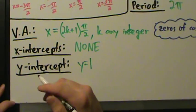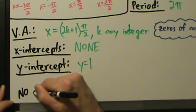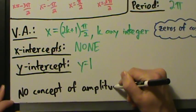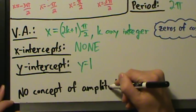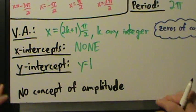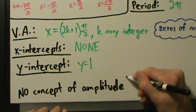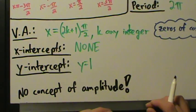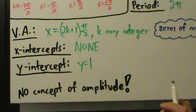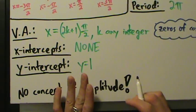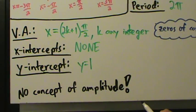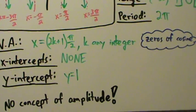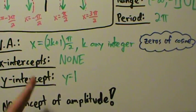It's worth mentioning that just like tangent and cotangent, there is no concept of amplitude for secant and cosecant. With sine and cosine you can talk about amplitude, but for secant, cosecant, tangent, and cotangent it does not make sense. Also, if you want to talk about shifting left and right, it's better not to use the term 'phase shift' — that technically only applies to sines and cosines. Just say 'horizontal shift' instead.